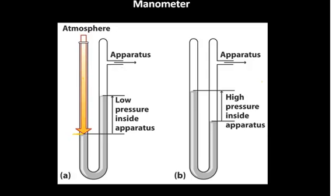In this diagram, let's assume that the apparatus is a tank containing some gas. The U-tube is the actual manometer and you put mercury inside the U-tube. If the pressure of the gas inside the apparatus is the same as the atmospheric pressure, then you would expect the level of the mercury to be the same on both sides of the U-tube, because the force would be equalized.